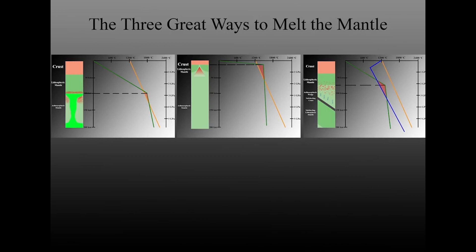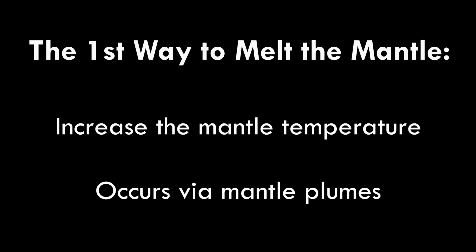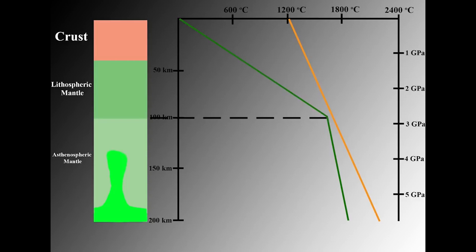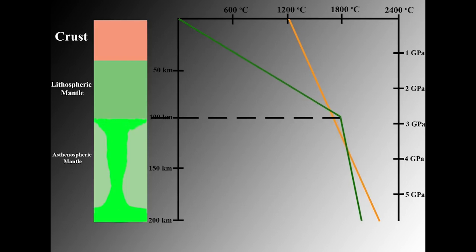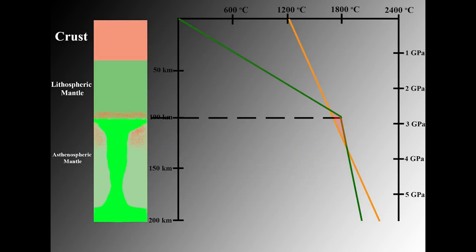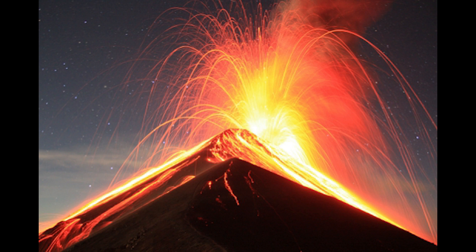There are three situations that enable the solidus to cross the geotherm and allow the mantle to melt: interplate mantle plumes, divergent margins, and convergent margins. The first way to melt the mantle is by simply making the mantle hotter. This is most often caused by a mantle plume like that beneath Hawaii. As the mantle plume rises through the asthenosphere and ponds at the base of the lithosphere, the geotherm is deflected to higher temperatures. When the geotherm crosses the solidus, partial melting starts to occur in the asthenosphere. If this magma escapes to the surface, it will erupt and form a volcano.